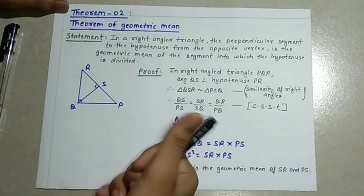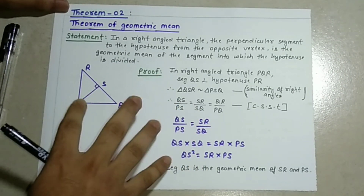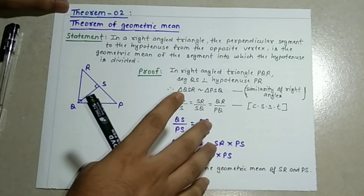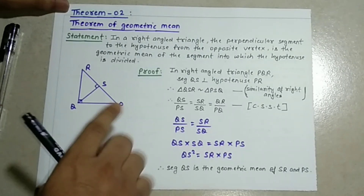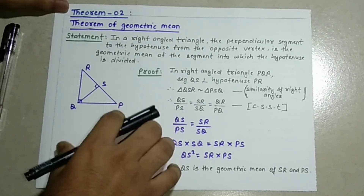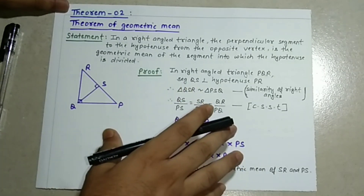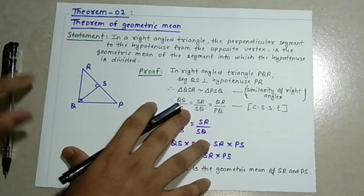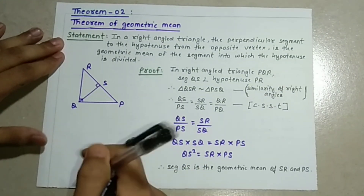First of all, we have seen the similarity and right angle theorem. Now we move to our second theorem, that is the theorem of geometric mean. This theorem is not important — it is a property that is rarely used in the chapter. I will tell you how to solve using the theorem of geometric mean.